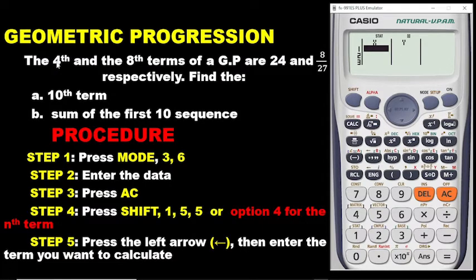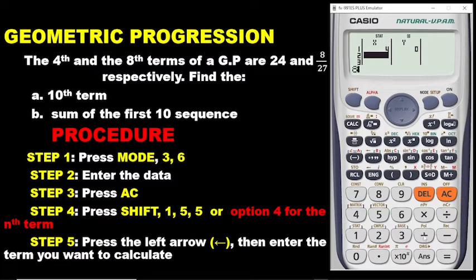We have the 4th term, so you press 4 and then press equals. The next term is the 8th term, so you press 8 and then press equals. These are the two terms given in the question.